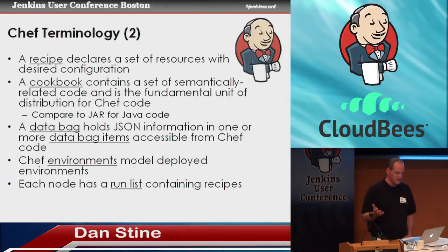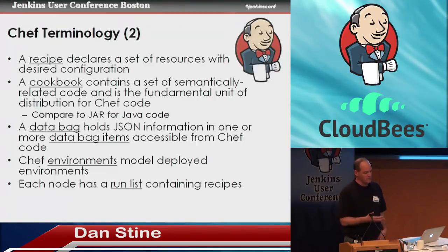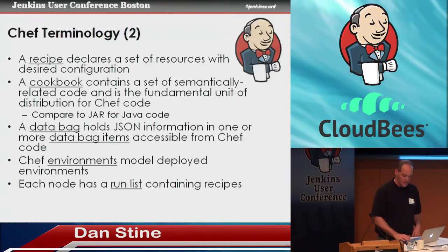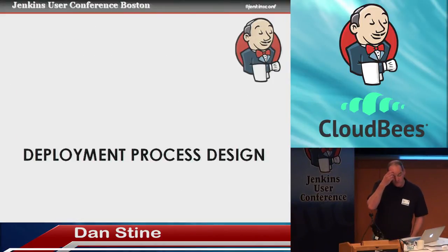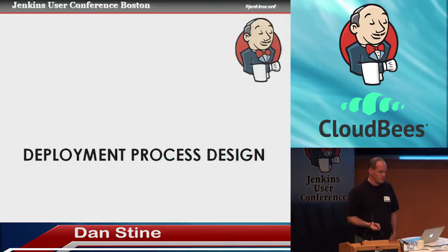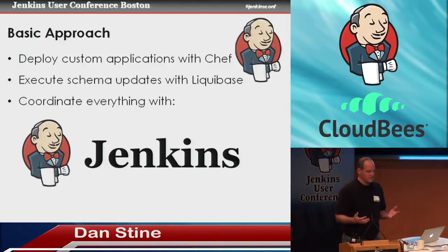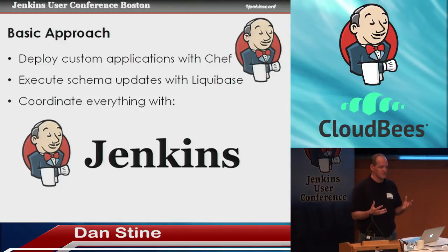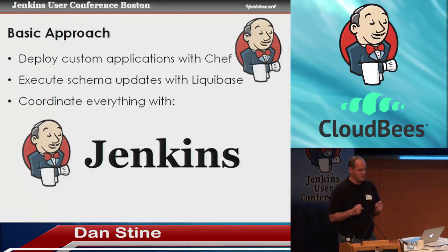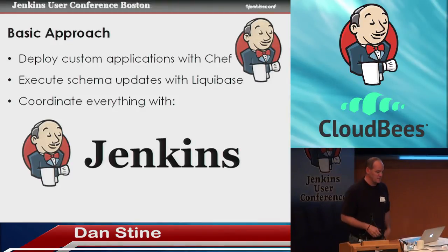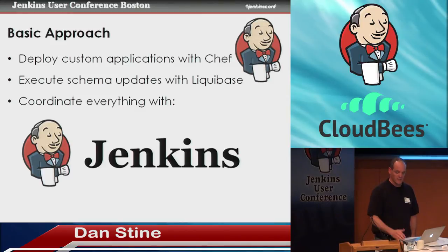That's the basics of Chef. We can move on to the key elements of our deployment process. Fundamentally, we want to deploy our custom applications with Chef — install them, configure them, generate a configuration file — and we want to run our schema updates for the database with Liquibase. We chose Jenkins to coordinate that whole process.